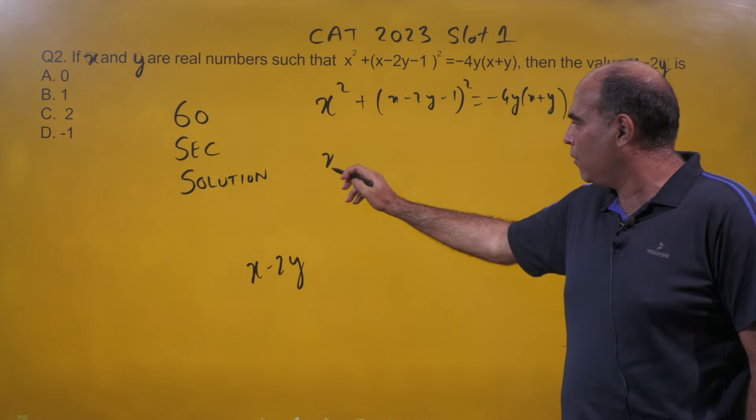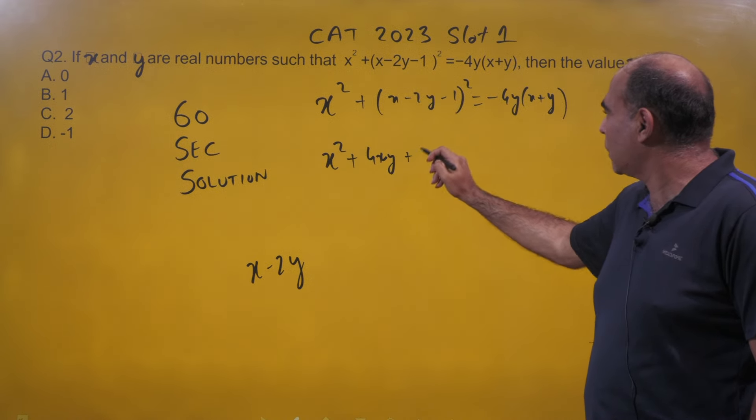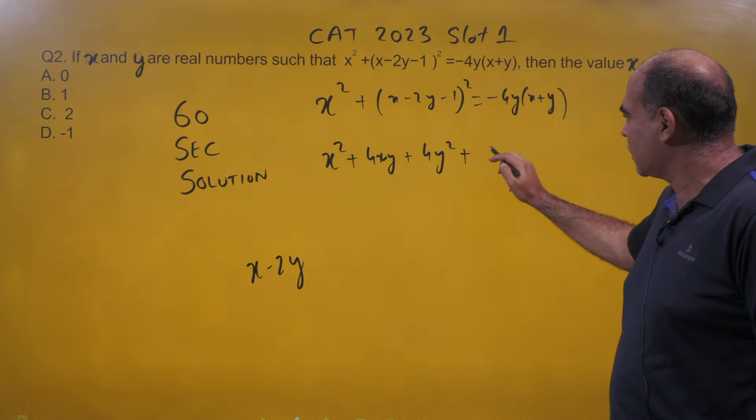We do that: x² + 4xy + 4y² + (x - 2y - 1)² = 0. Do you see the solution?